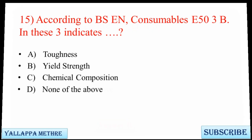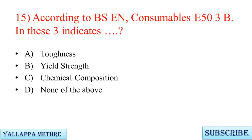Question 15: According to BS EN, consumable designation Z53B — the number 3 in this designation indicates — A. Toughness, B. Yield strength, C. Chemical composition, D. None of the above.